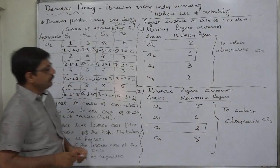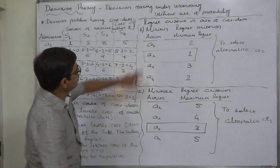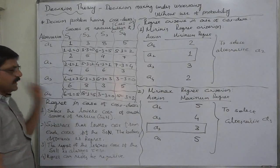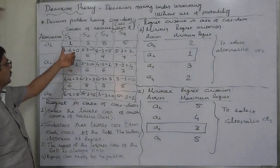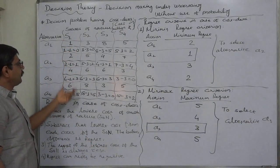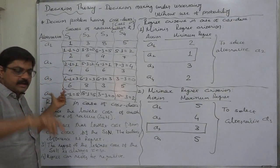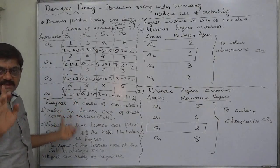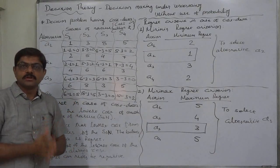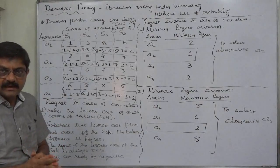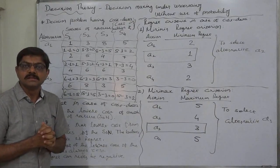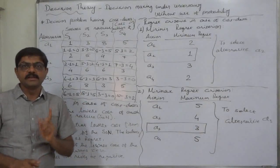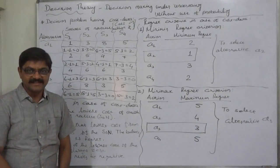This is the minimax regret criterion, and this is the mininim criterion. To summarize: in case of cost data, the lowest cost of each state of nature is selected and subtracted from all the costs of that state of nature. The balance is the regret, which can never be negative, and the regret for the least cost of the state of nature is always zero. Thank you very much.